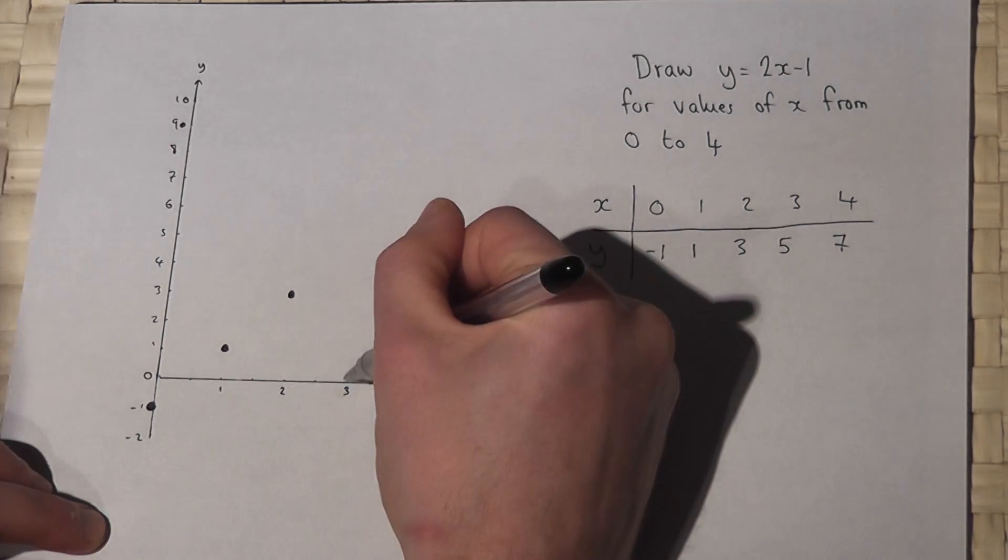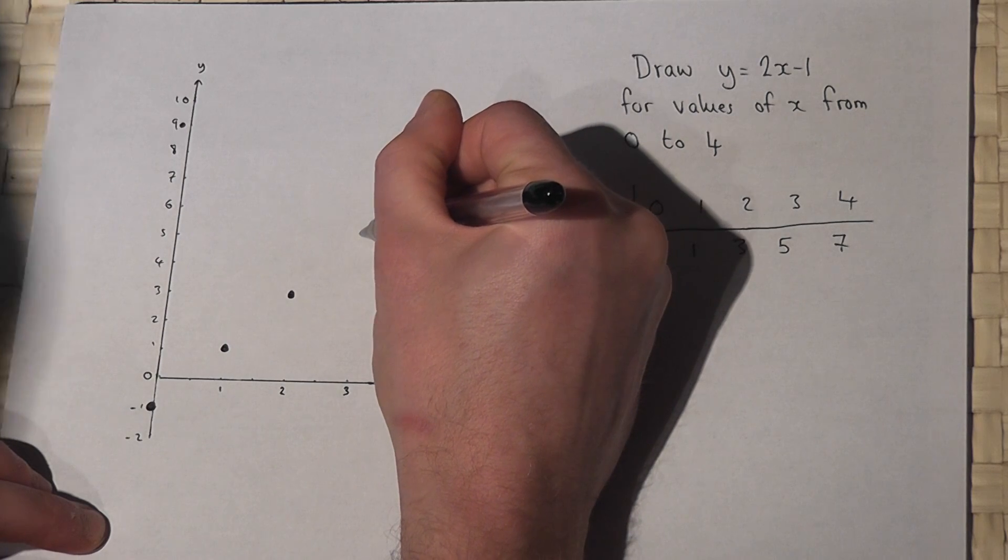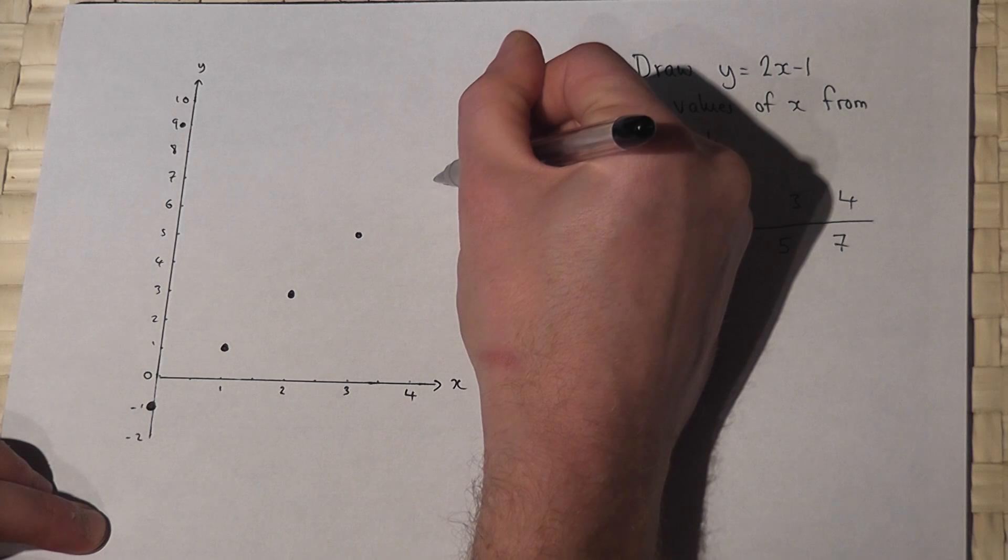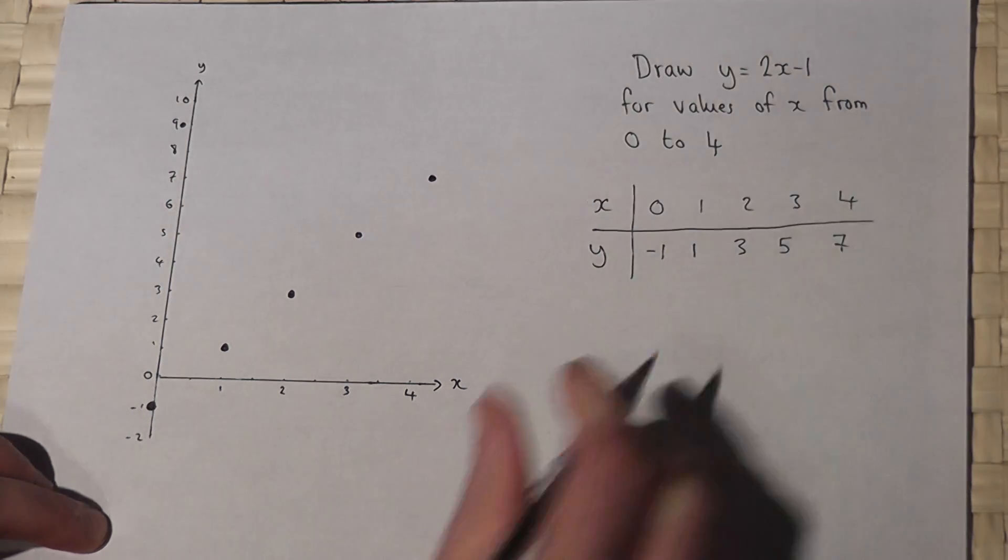When x is 3, y is 5. When x is 4, y is 7. Normally, of course, you'd have graph paper for this sort of question.